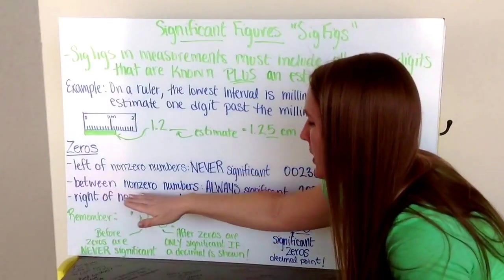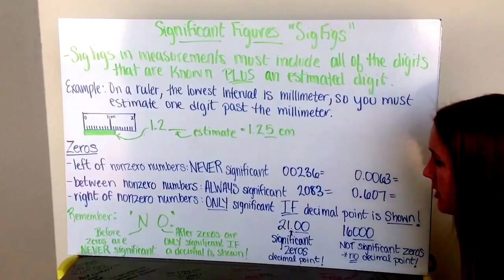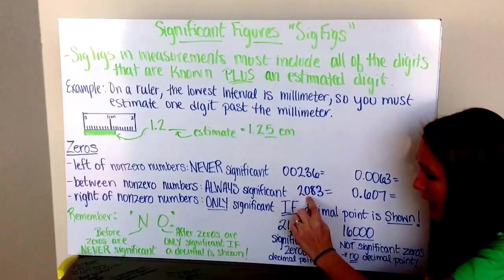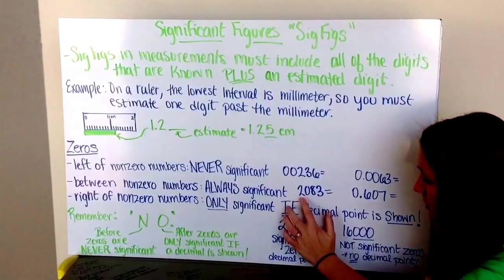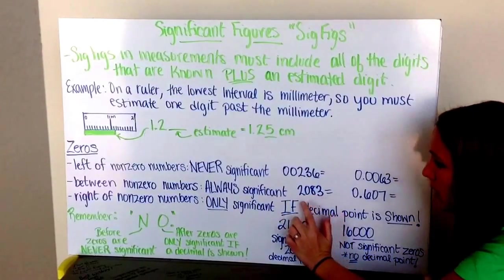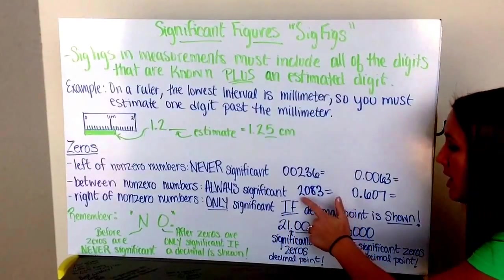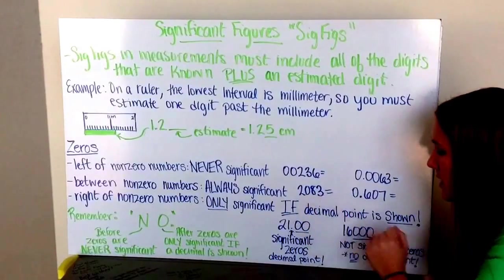Now between non-zero numbers, these would be zeros that are sandwiched in between non-zero numbers. These are always going to be significant because they're holding a place. They're saying you don't have any hundreds numbers here. So this number of 2,083, this zero in here is important. It tells us something about the number, and so we have 1, 2, 3, 4 significant figures in my number here.